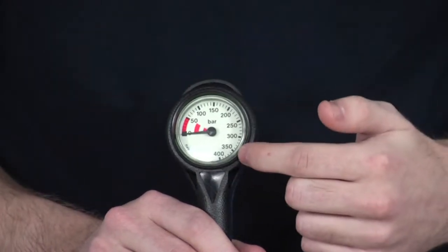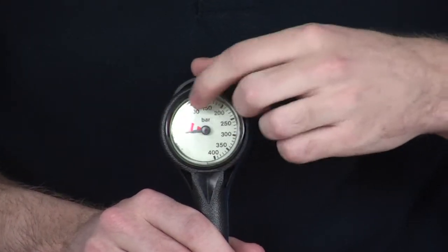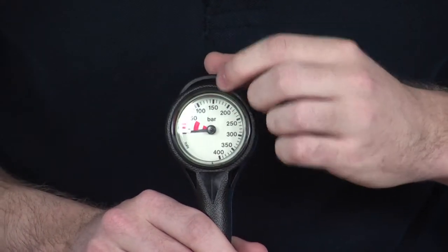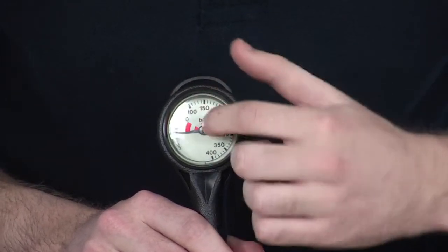It goes from 0 to 400 bar, as we can see on the front, and the lower pressures or air readings from 0 to 50 are clearly marked with a red or orange color with two stripes just in the middle here.